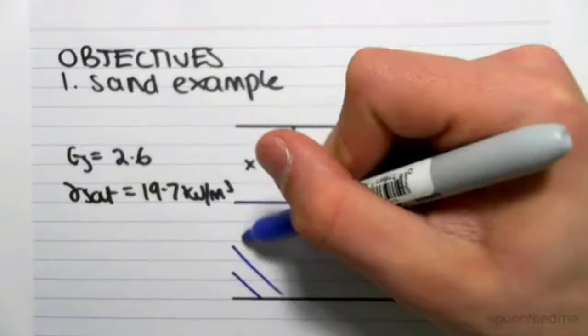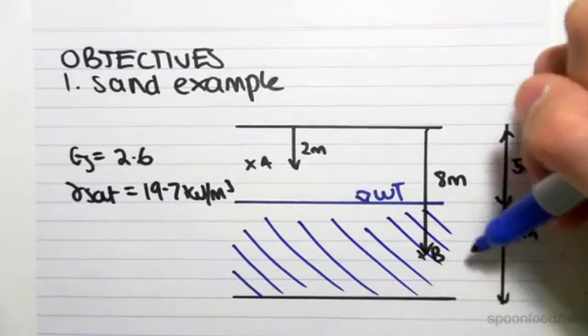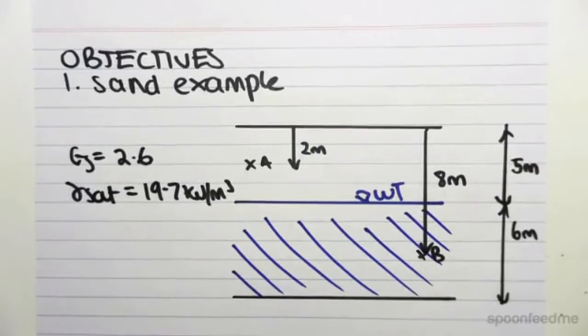We've got a water table which is five meters below the surface. So for a sand, everything below the water table will become saturated.